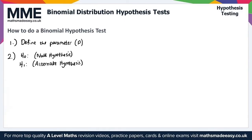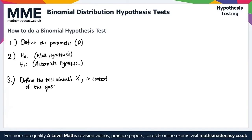Step three: define the test statistic X in the context of the question. Step four: write down the distribution of X under the null hypothesis. We say 'under H0' and then give X with the parameters of our binomial distribution — that would be n, and P is given in your null and alternate hypotheses.